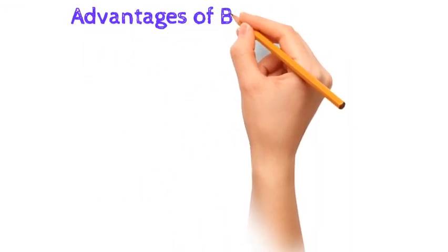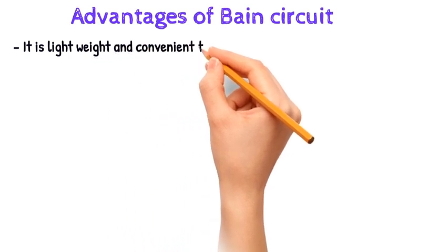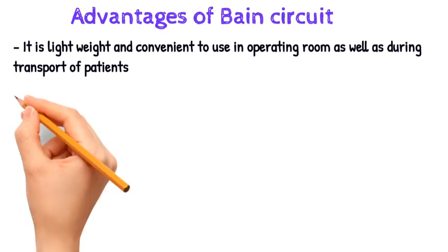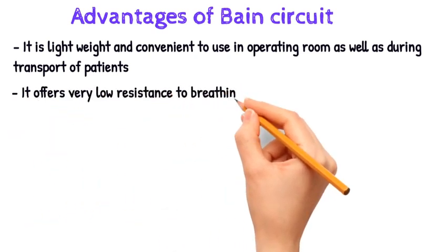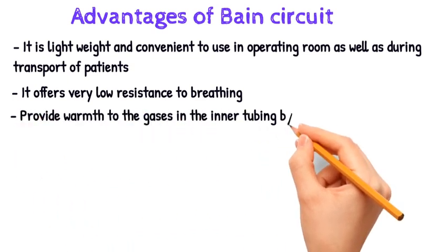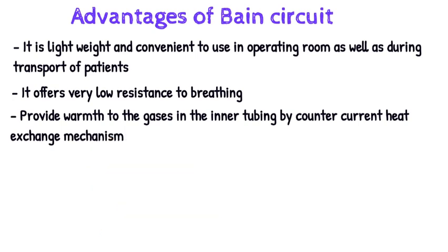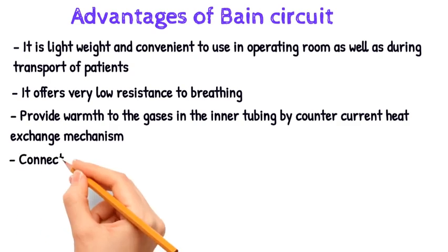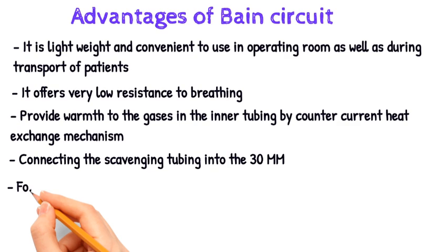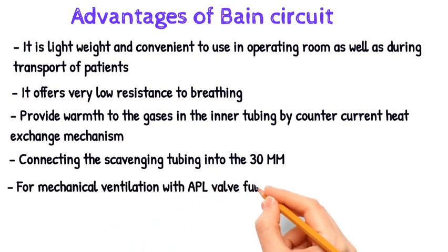Advantages of the Bain circuit: it is lightweight and convenient to use in the operating room as well as during transport of patients. At all fresh gas flows used in clinical practice, it offers very low resistance to breathing. Due to its coaxial structure, exhaled gases in the outer tubing provide warmth to the gases in the inner tubing by a counter-current heat exchange mechanism. Since the APL valve is located far from the patient end, scavenging of exhaled gases is possible by connecting the scavenging tubing to the 30 mm connector at the machine end. Some ventilators can be attached in place of the reservoir bag for mechanical ventilation with the APL valve fully closed.